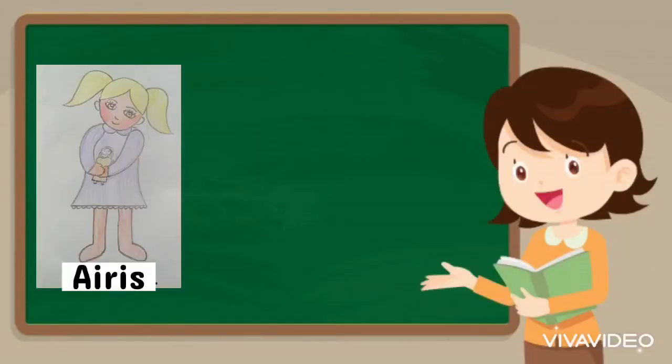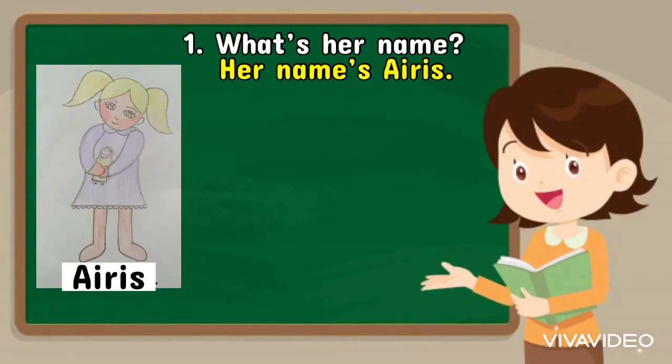The first question is: what's her name? Apakah nama dia? Her name is Iris. Nama dia ialah Iris.